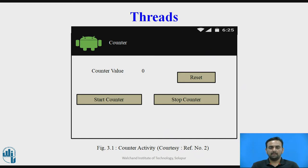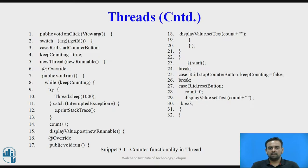We are basically implementing a counter app, which you can see in the counter activity. Start counter and stop counter are the two buttons related to it. After starting, the counter will increment its value, and at stop it will stop. We can reset the value by pressing the reset button. At the start, the runnable instance is passed as a parameter and the runnable interface is overridden, containing the run function. The display value shows the counter value, and we can call the click function for the click event by calling the start method.